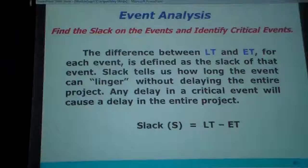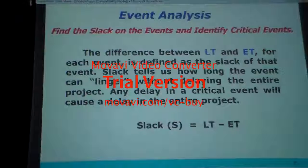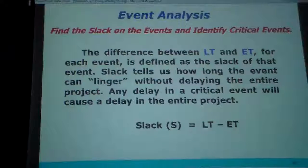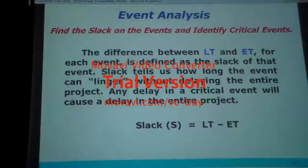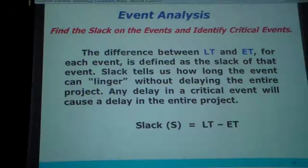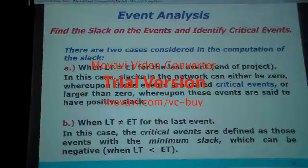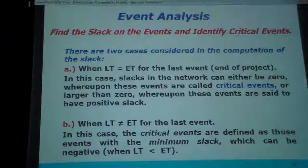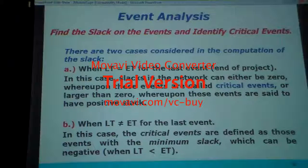Find the slack of the events and identify critical data. The difference between late time and early time for each event is identified as the slack of that event. Slack tells us how long the event can delay without delaying the entire project. Any delay in a critical event will cause a delay in the entire project. When we start from this side, we have to fill this down; when we come back, we have to fill this.